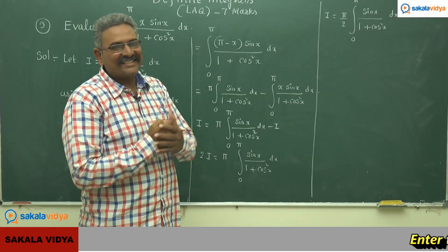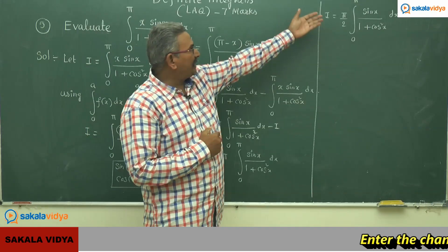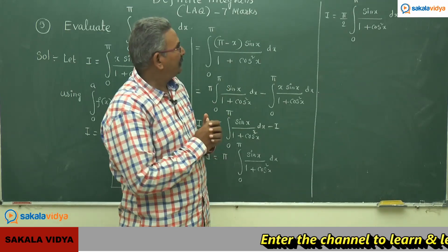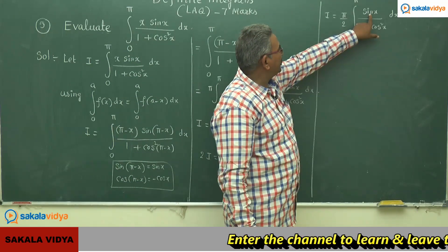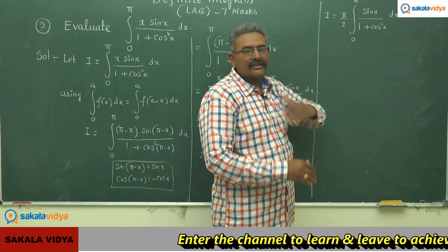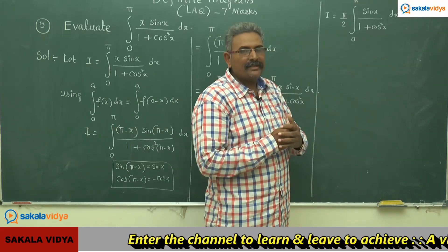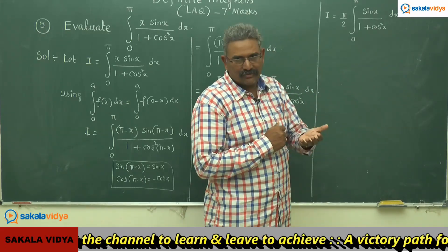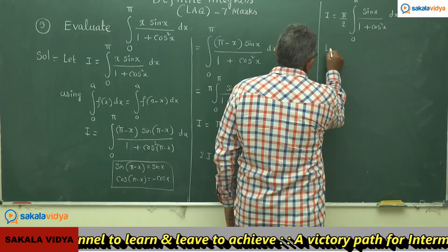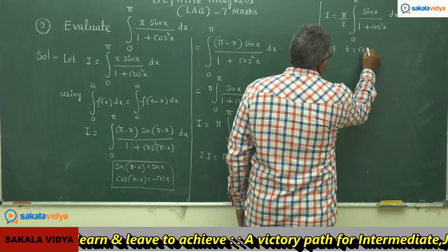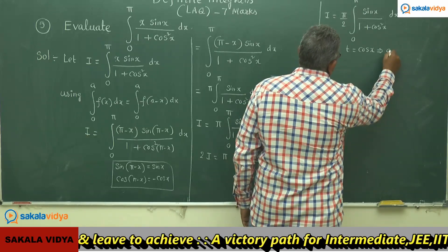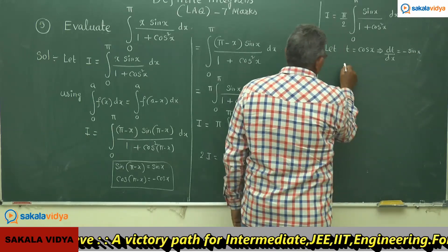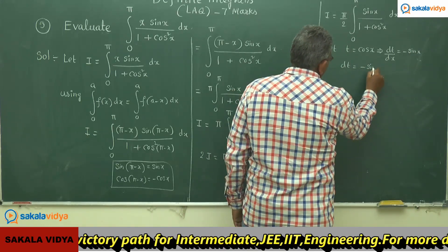Let us see how to solve the integral of sin(x) / (1 + cos²x) dx. Concentrating on indefinite integration — sin(x) is part of the derivative of cos(x). The derivative of cos(x) is minus sin(x). So we substitute cos(x) = t. Then dt/dx equals minus sin(x), so dt equals minus sin(x) dx.